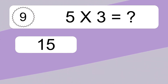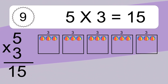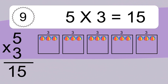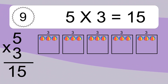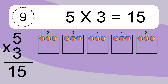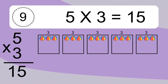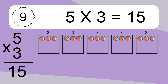5 times 3 equals 15. We have 5 boxes, and each box has 3 colorful balls inside. If you count all the balls in all the boxes together, you will have 5 times 3 balls. This equals 15 balls.